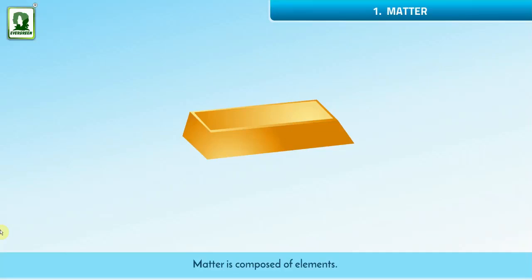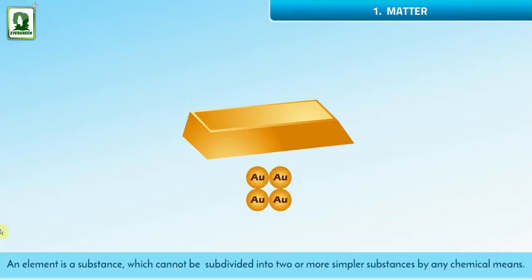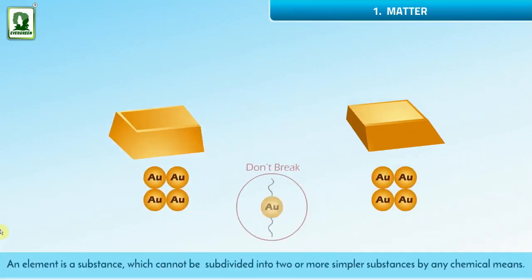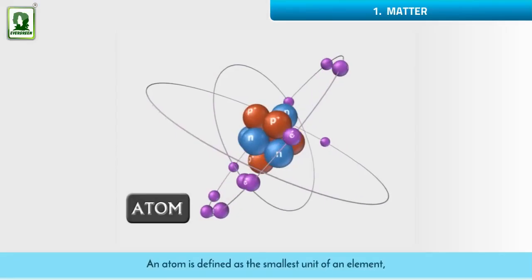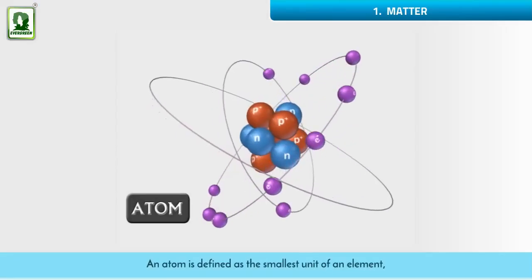Matter is composed of elements. An element is a substance which cannot be subdivided into two or more simpler substances by any chemical means. The element in turn is composed of molecules or atoms. An atom is defined as the smallest unit of an element.